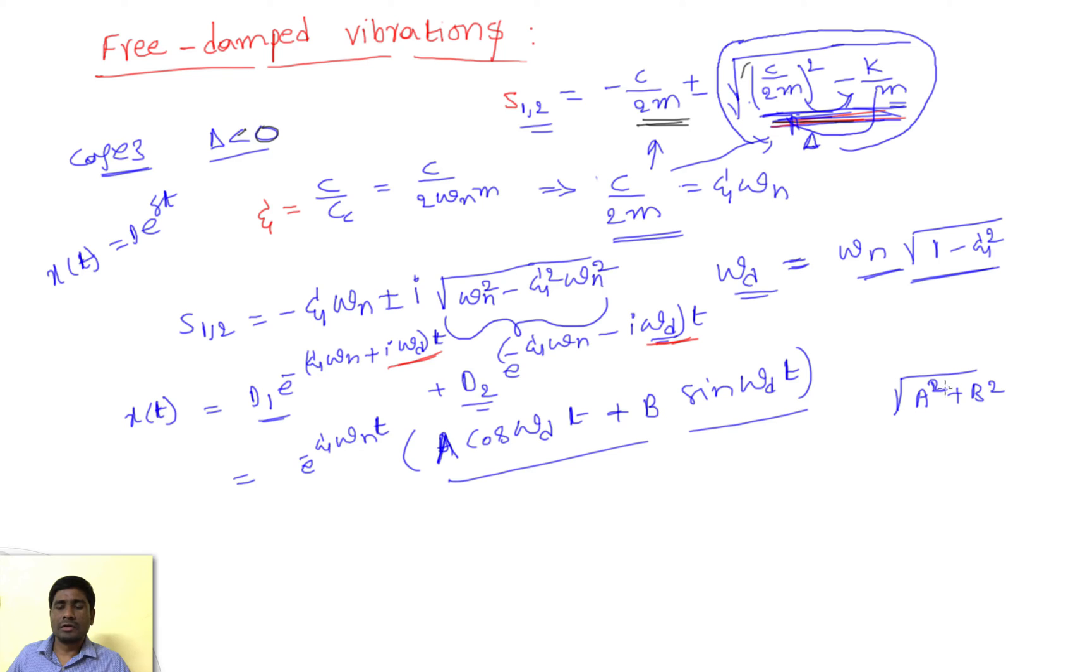We convert by multiplying and dividing with the square root of a squared plus b squared. This procedure is similar to when we solved for free vibrations. I will call the new constant A, where A is the amplitude, times e to the minus xi omega n t times sin of omega d t plus phi.